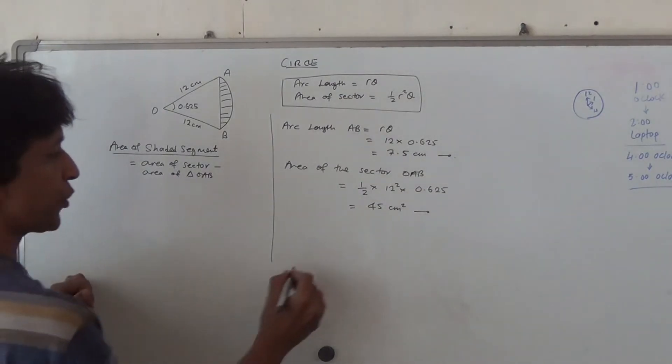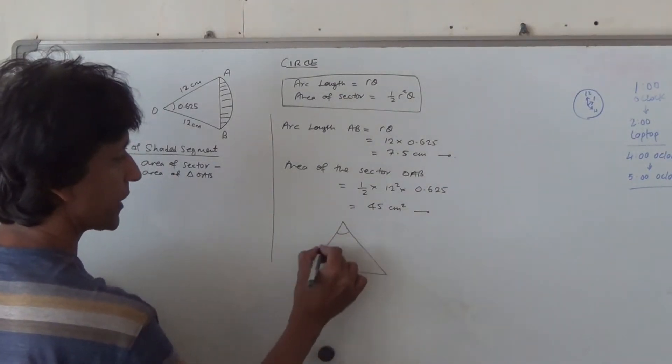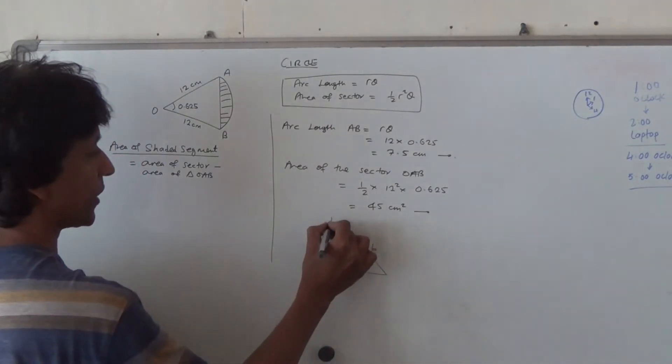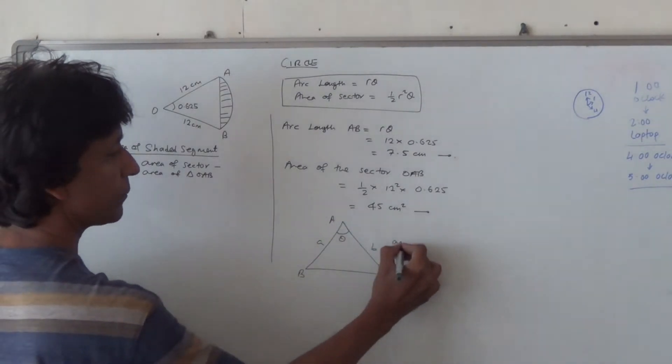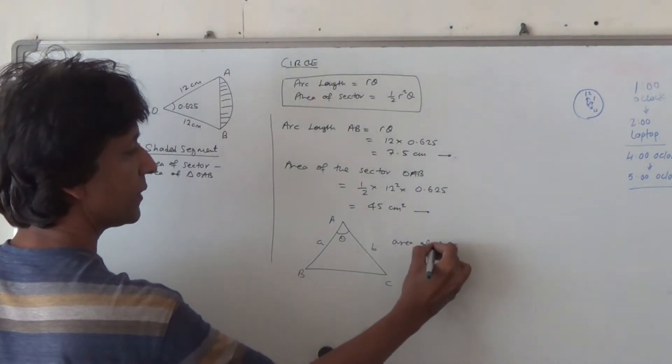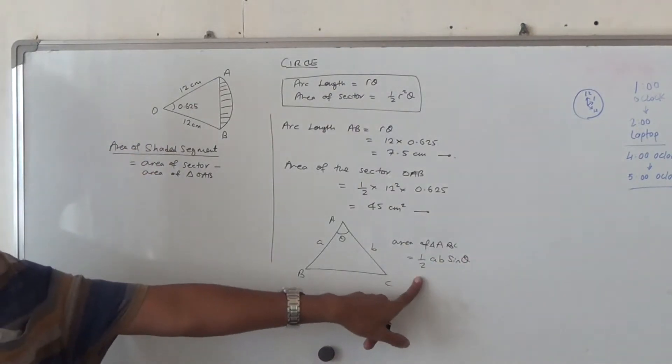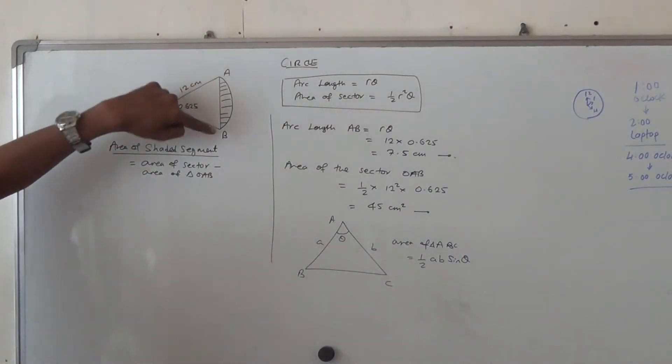I'm sure you'll remember, if you have a triangle like this, and you want to find its area, and let's say this is A and B and you've got theta, and this is the triangle ABC for some reason. So area of triangle ABC should then be equal to half AB sine theta. That's the formula we use. So we're going to use this formula to find the area of this triangle here.